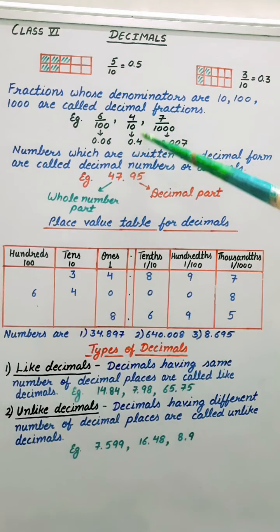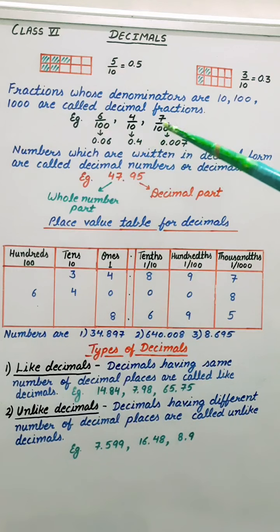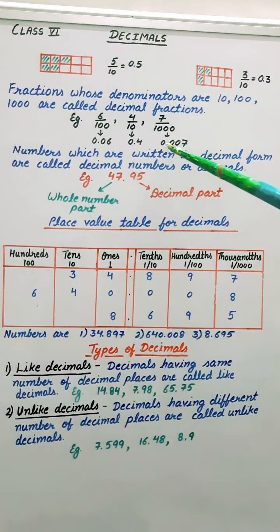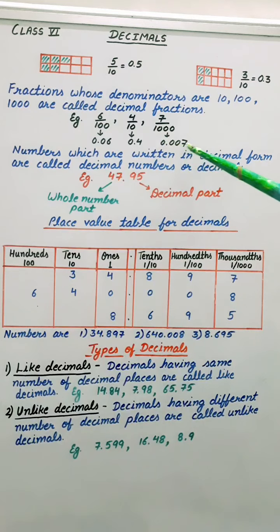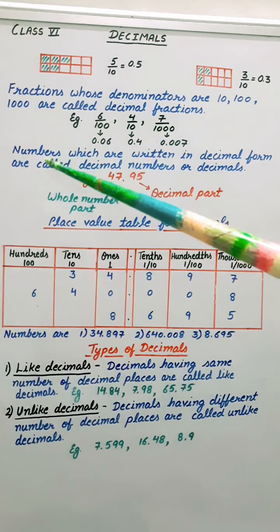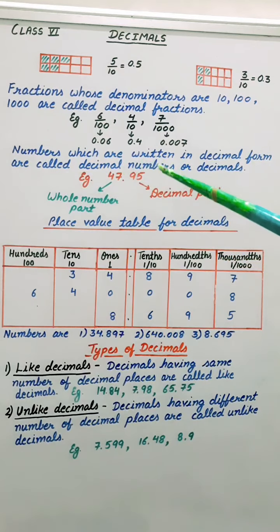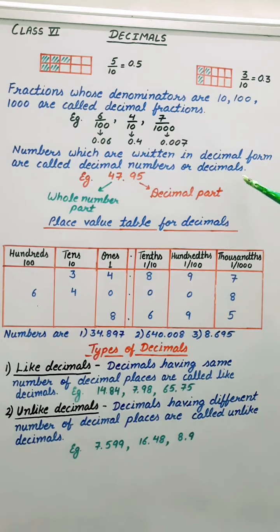4 by 10 is written as 0.4 and 7 by 1000 is written as, because 3 zeros, so we have to count 1, 2, 3, 3 digits and then decimal. So 0.007. So numbers which are written in decimal form, they are called decimal numbers or decimals.